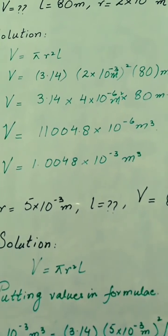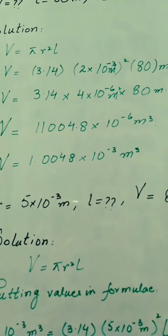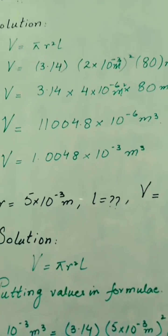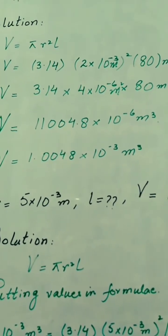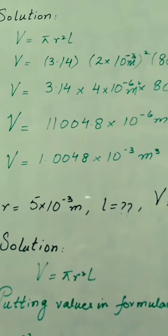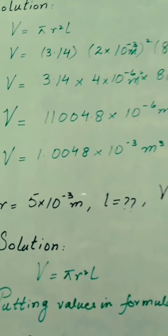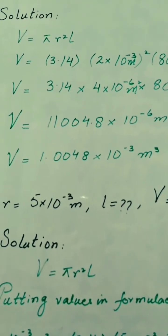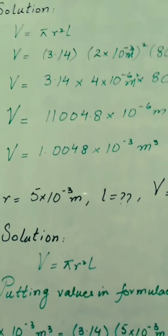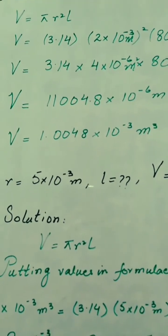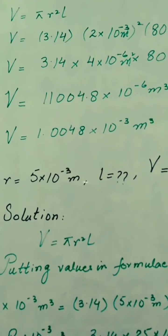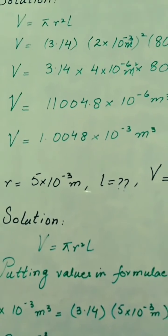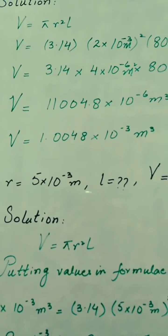Multiplying 3.14 × 4 × 80 gives 1004.8, so V = 1004.8×10⁻⁶ m³. Shifting the decimal point to get standard form: since the point shifts to the left by 3 places, the power decreases from −6 to −3. The answer is V = 1.0048×10⁻³ m³. When the power is negative the decimal point moves left, and when positive it moves right.